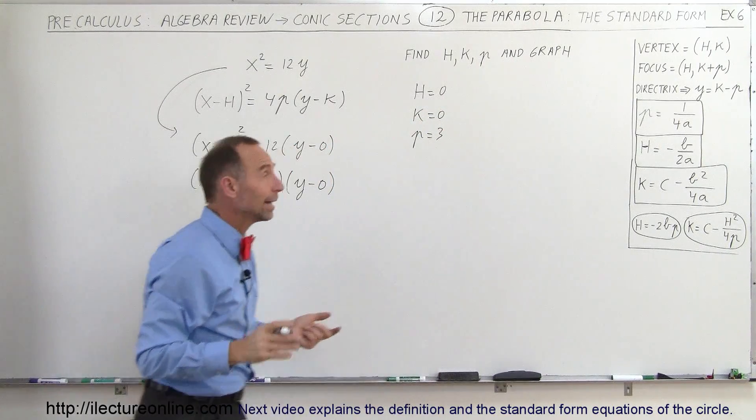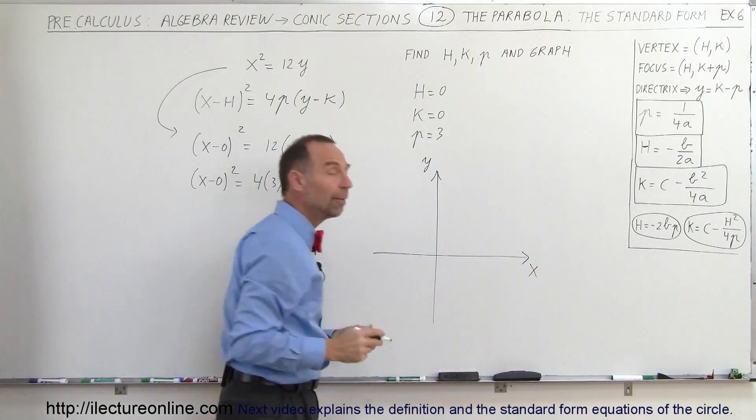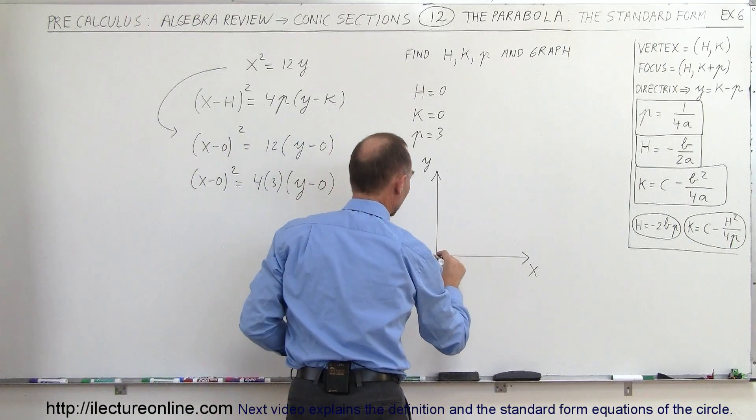So now I want to go ahead and graph that. First of all, my vertex is going to be (h, k), so therefore my vertex is at (0, 0).